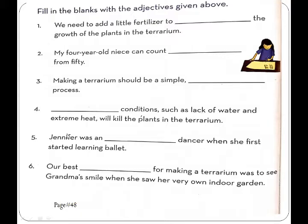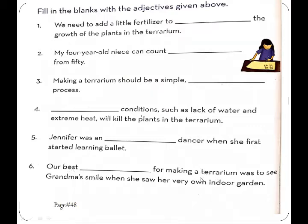Blank number 5: 'Jennifer was an ___ dancer when she first started learning ballet.' The answer is 'awkward' — awkward means something which is not very good or remarkable. Blank number 6: 'Our best ___ for making a terrarium was to see grandma's smile when she saw her very own indoor garden.' The answer is 'reward.'